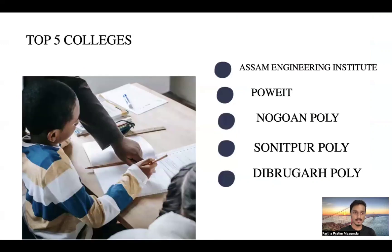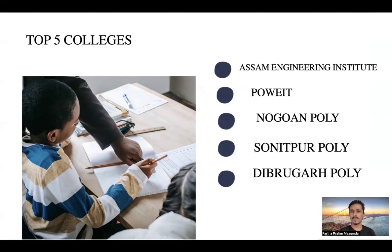Top 5 colleges: here is the list. The famous ones are SM Engineering Institute, then Jorhat Polytechnic, Nagaon Polytechnic, Sonitpur Polytechnic, and Dibrugarh Polytechnic. Prince of Wales Institute is also a well-known one, located just 2 or 3 kilometers away.